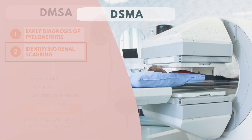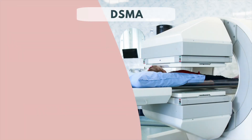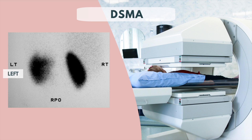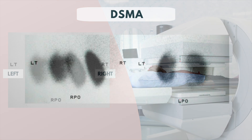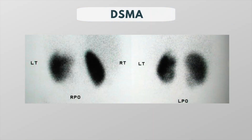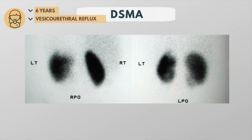Let's look at an example. Note that the camera is usually placed behind the patient for imaging, so the image of the left kidney is on the left and the image of the right kidney is on the right. This is a scan from a six-year-old girl with known vesicoureteral reflux who had multiple urinary tract infections.